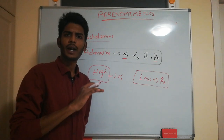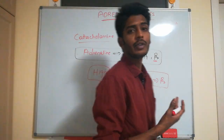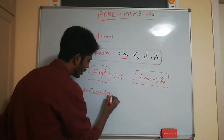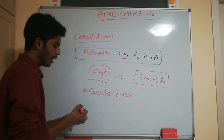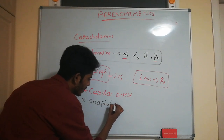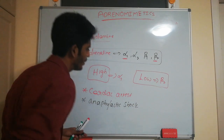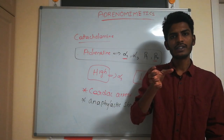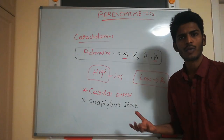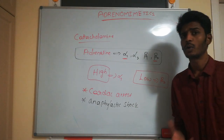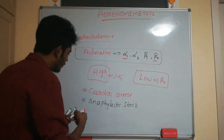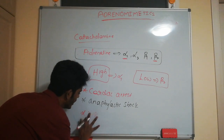Adrenaline is produced from the adrenal medulla. Therapeutically, it is used in cardiac arrest treatment and anaphylactic shock. During anaphylactic shock, bronchus constricts due to allergic reaction, and adrenaline helps by causing bronchodilation; it also raises blood pressure when the patient is going into shock. It can also be used in severe bronchial asthma, administered by inhalation to avoid systemic effects.